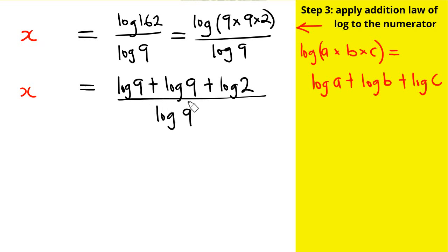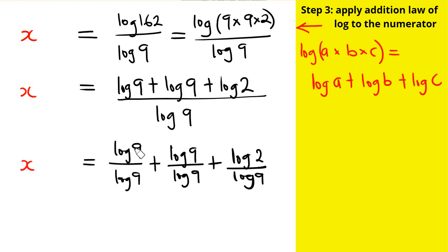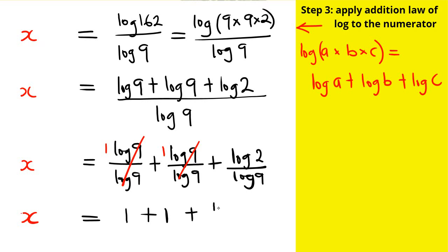What this means is that log 9 divides each term in the numerator. So we get log 9 over log 9, plus log 9 over log 9, plus log 2 over log 9. Each of the first two terms equals 1, so we now have x equals 1 plus 1 plus log 2 over log 9.